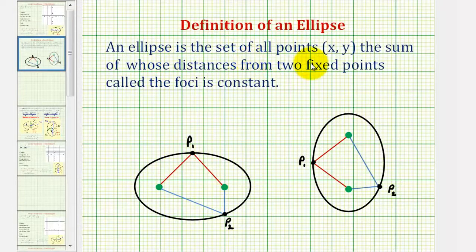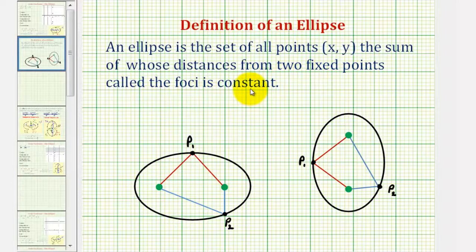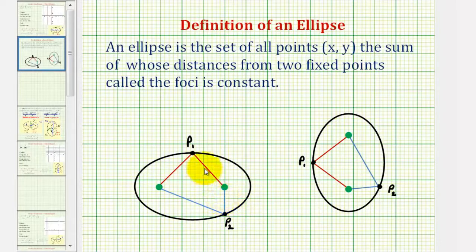An ellipse is a set of all points on the coordinate plane, the sum of whose distances from two fixed points, called the foci, is constant. For example, if these two green points are the two fixed points, the black graph is the ellipse, which means for any point on the ellipse, the sum of the distances to the two green points would always be the same.